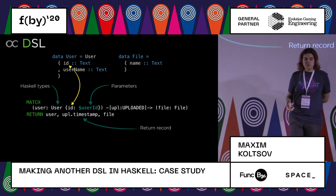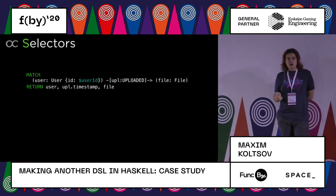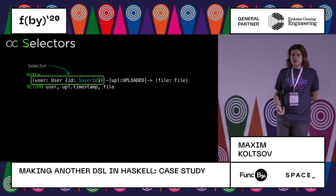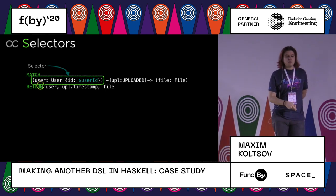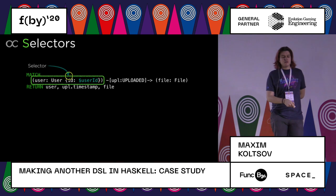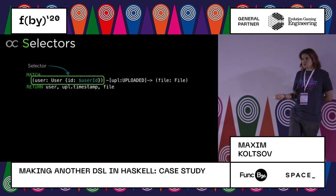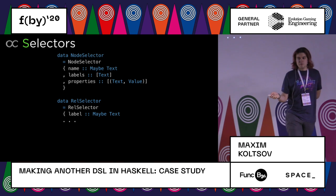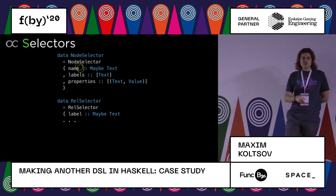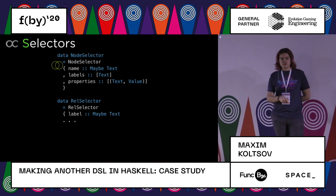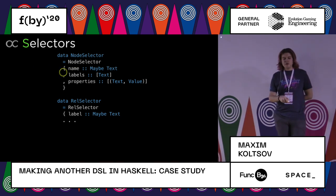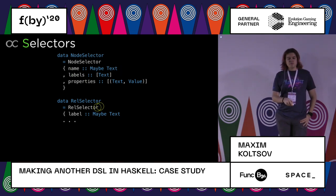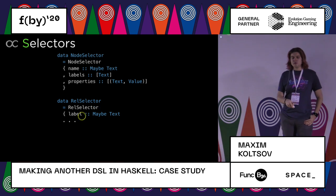I'll call this thing a selector — it's a pattern for a node. It has a variable name, some labels it may have, and some parameters that must be matched. How can we model these selectors in Haskell? Selector for nodes and selector for relations are simple records. They have variable names, some labels, and properties. A node selector has multiple labels, and a relation selector has at most one, which we model as a Maybe.